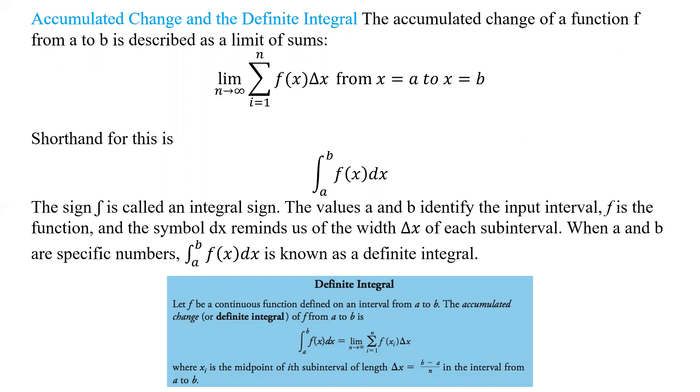The sum of i from 1 to n, the limit as n goes to infinity, of f of x times that delta x, that's from a to b, from x a to b.